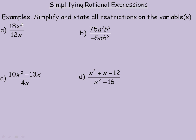So 18x cubed is a polynomial, actually just a monomial, and 12x is another monomial and they're divided so it's a rational expression.